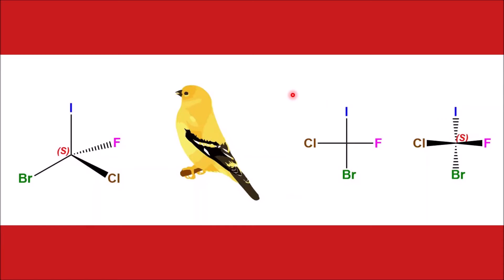How to convert this Fischer projection formula to wedge-dash formula? If we look at this structure from the top, we know that the groups on the horizontal bonds are the groups pointing towards you or coming out of the plane of the paper, and the groups on the vertical are the groups going into the plane of the paper or going away from us.